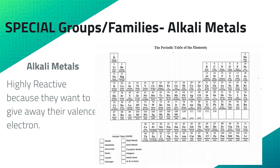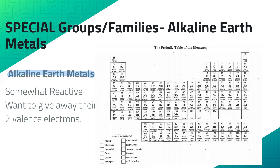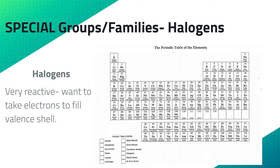There are a couple of groups or families on the periodic table that have specific names. The alkali metals are highly reactive because they want to give away their one valence electron. The alkaline earth metals are still fairly reactive because they want to give away their two valence electrons. The halogens are extremely reactive because they only need one valence electron to complete their octet.